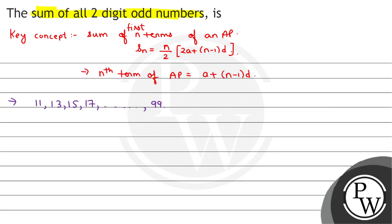99. So we need to find Sn. a = 11, d = 13 - 11 = 2, and the last term an = 99. First, we need to find n.